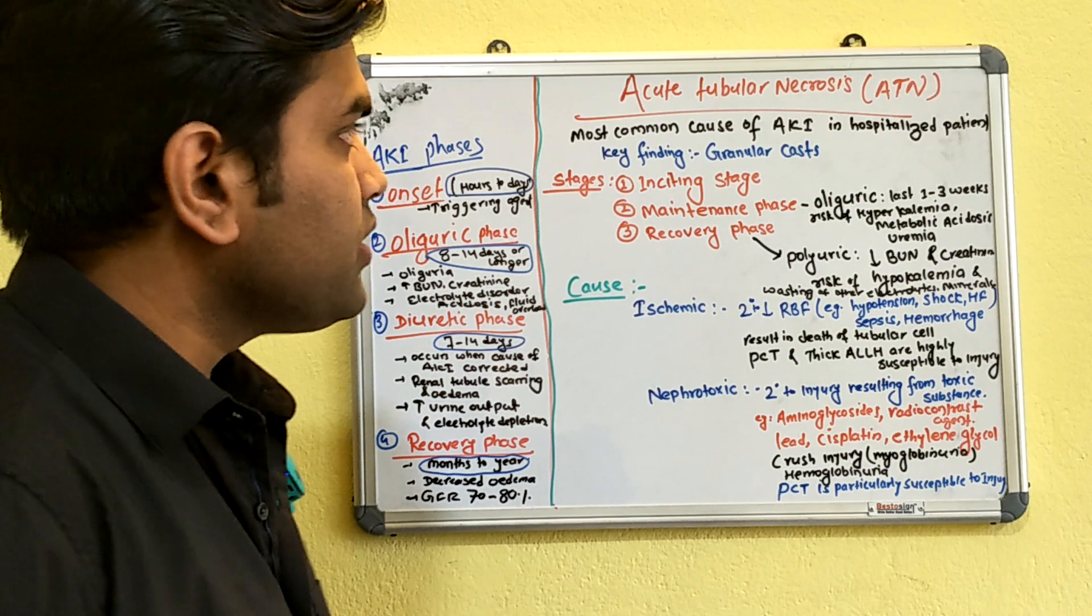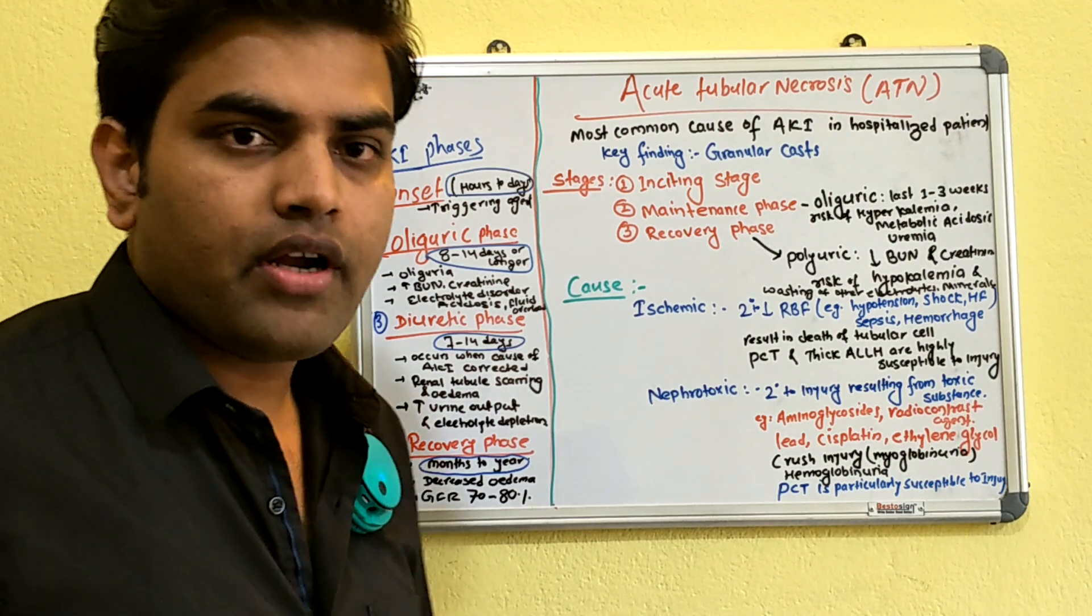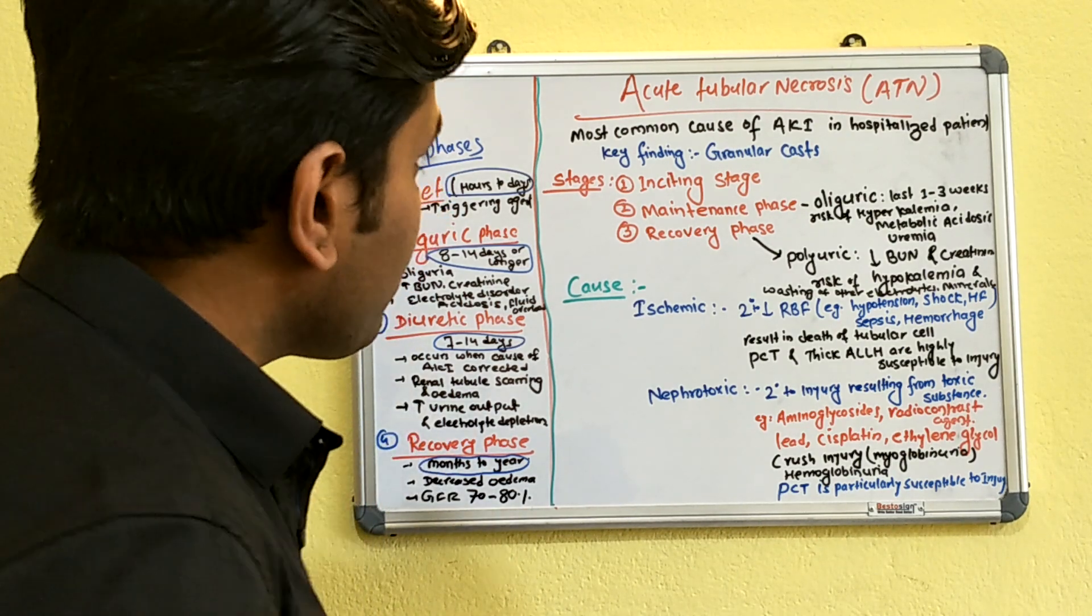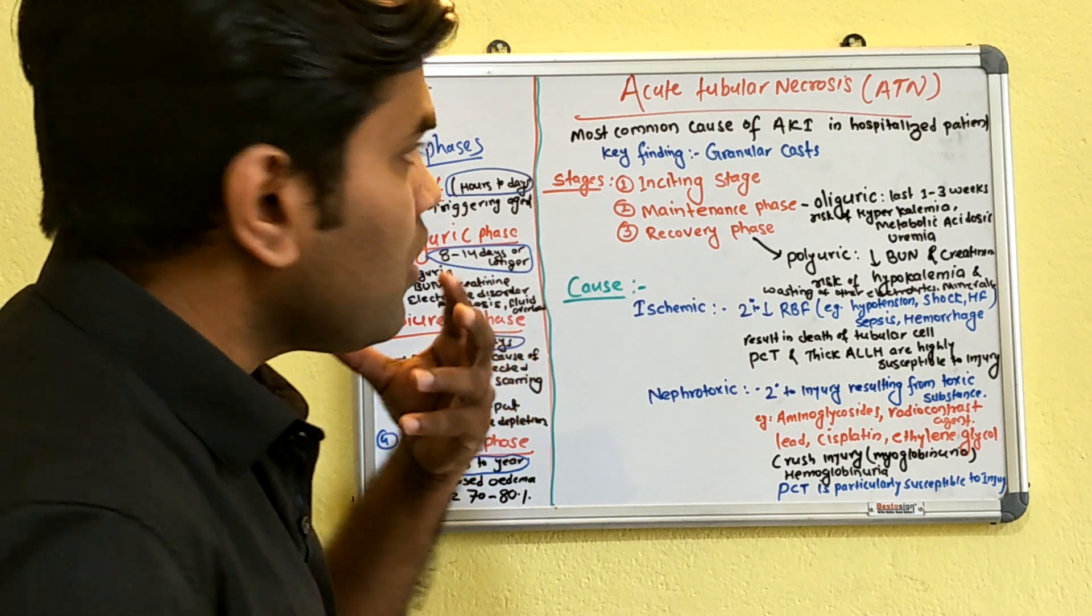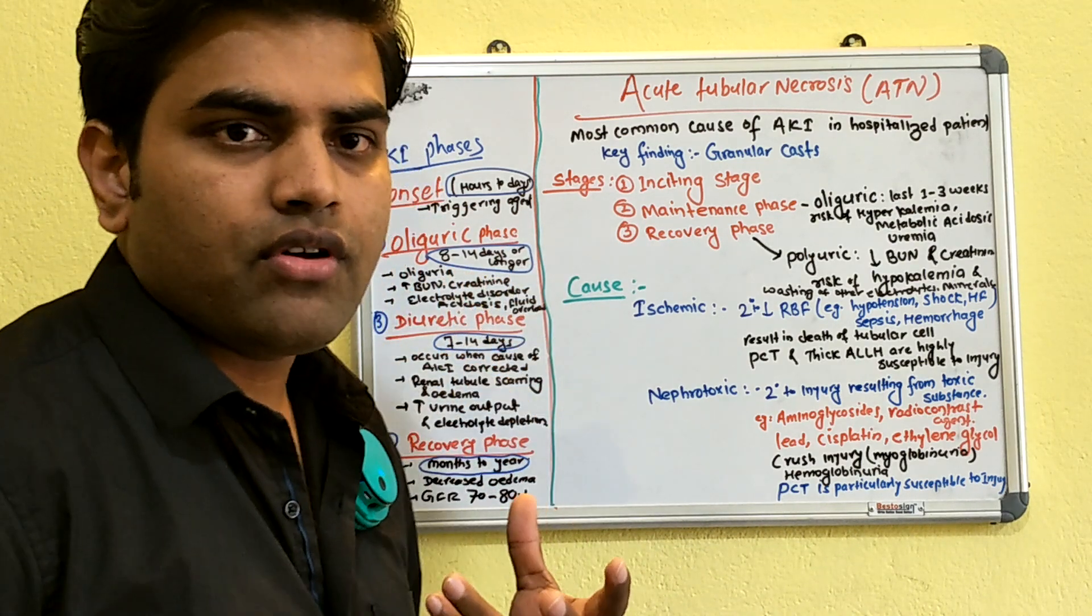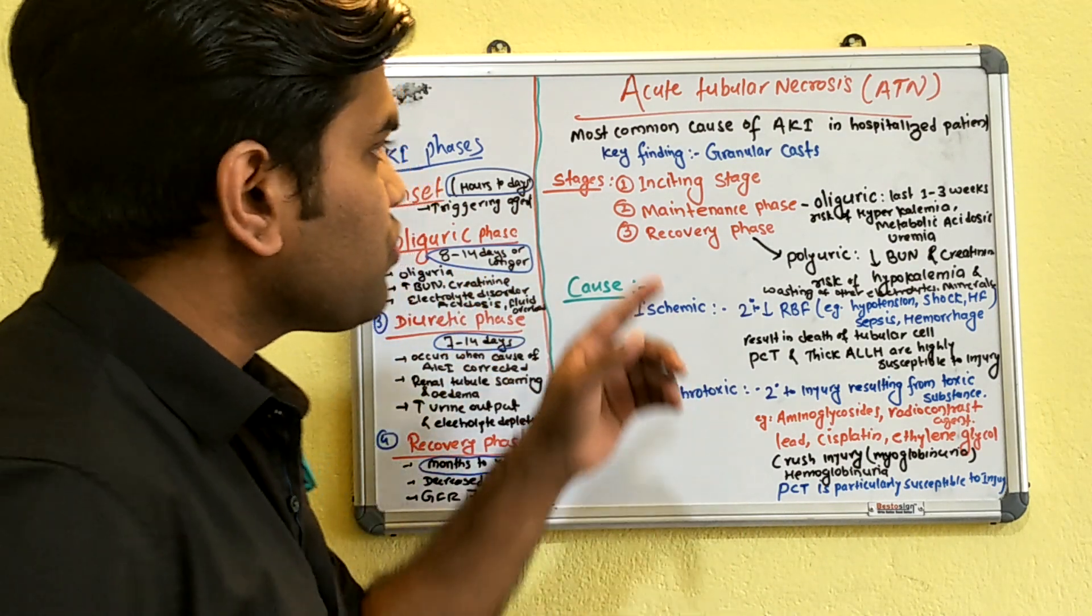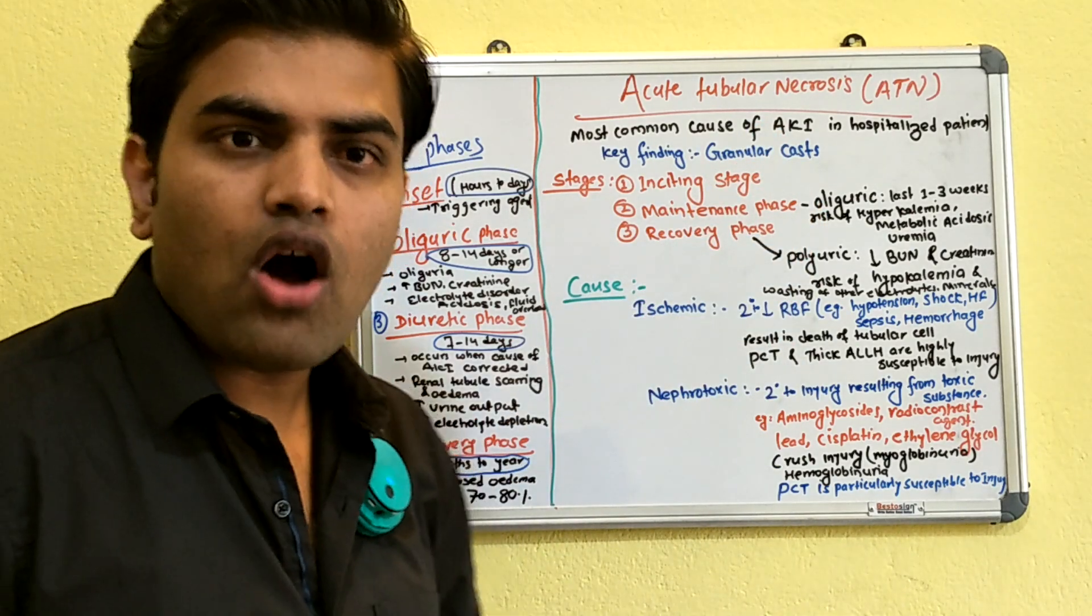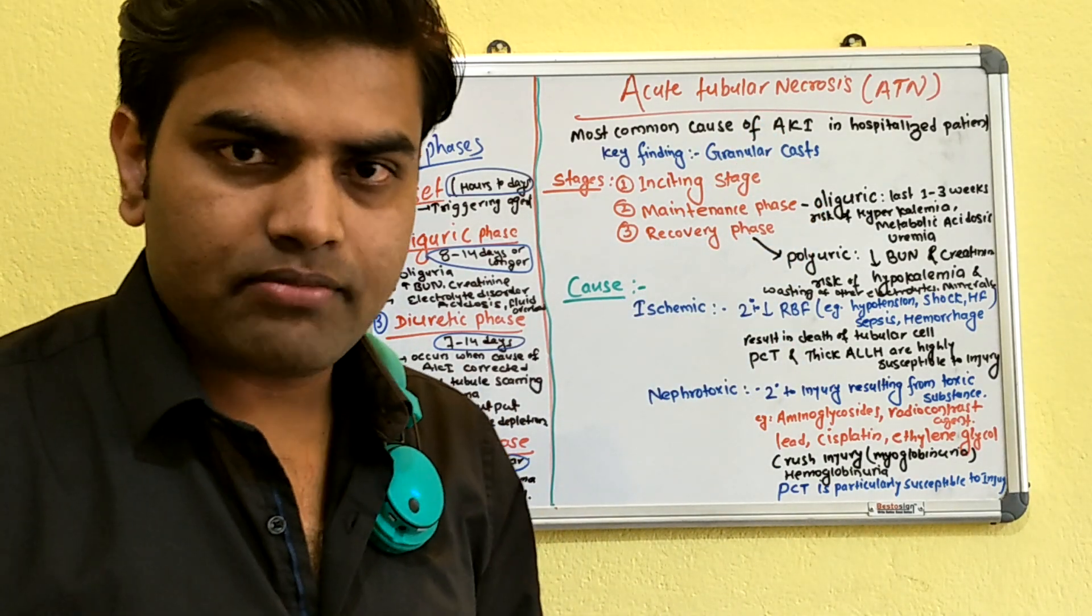Hello everyone, today we will be discussing acute tubular necrosis. Acute tubular necrosis is one of the major reasons to cause acute kidney injury or acute renal failure.